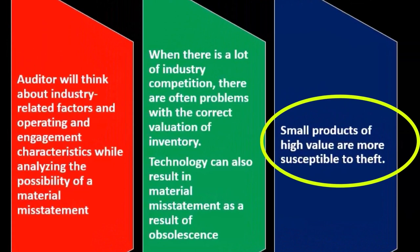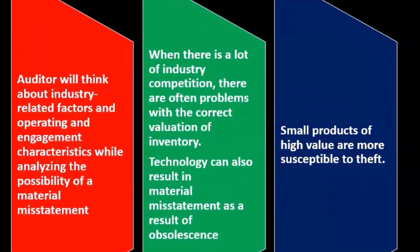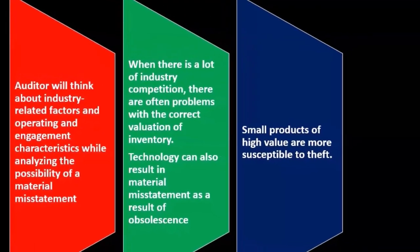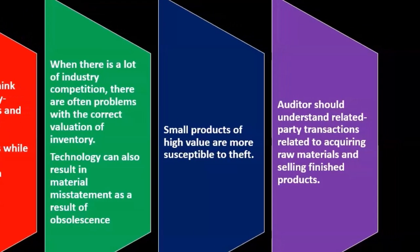For example, if your inventory consists of something like diamonds, that presents more risk than if you're selling something like forklifts. Someone stealing a forklift from inventory is possible but not nearly as likely as theft of diamonds. So we would consider high-value small items to be more inherently risky as they're more subject to possible theft, and the company would likely be aware and have safeguards in place.